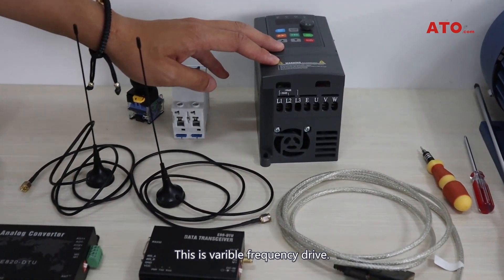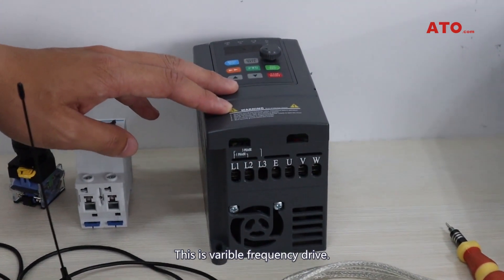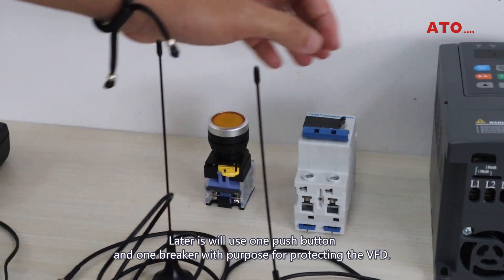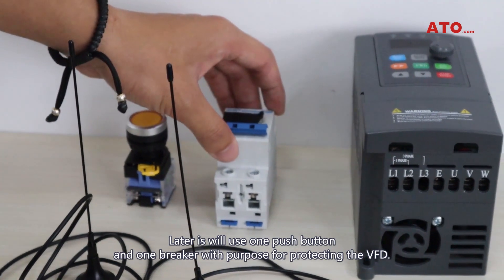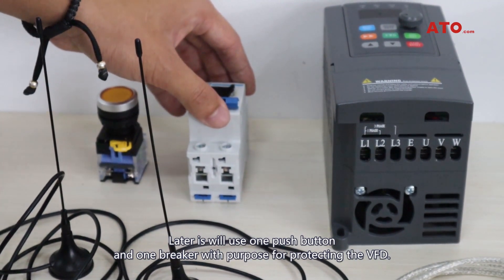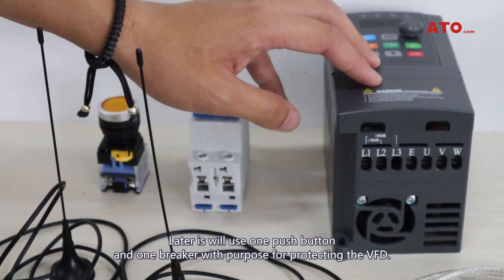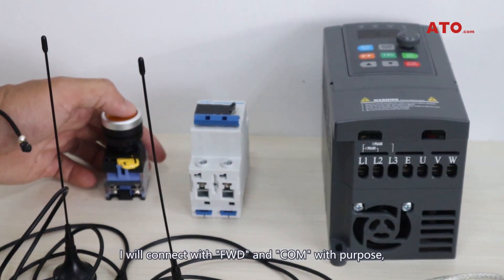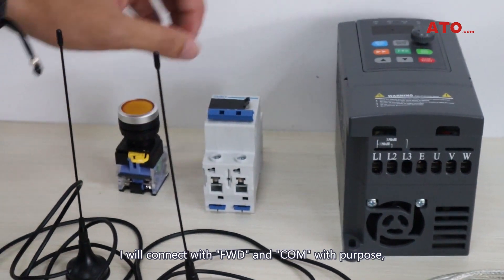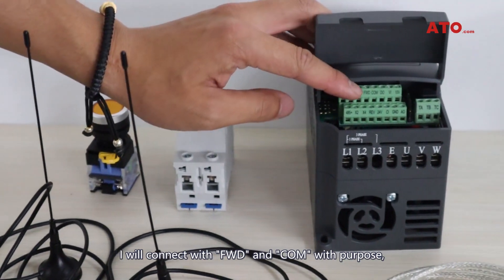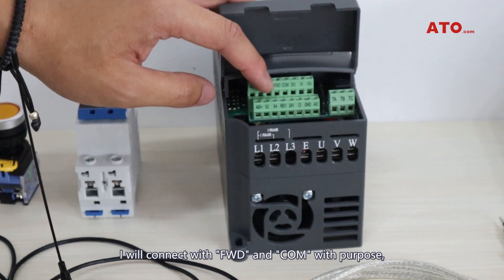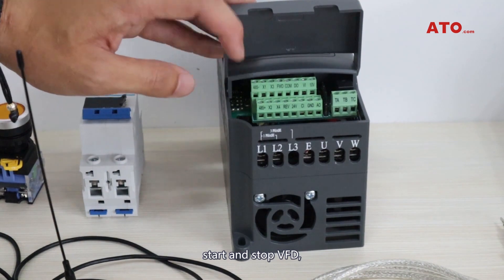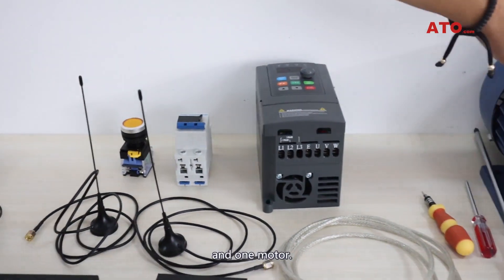This is the variable frequency drive. Later on, I will use one push button and one breaker with the purpose of protecting the VFD. This push button I will connect with forward and common with the purpose to start and stop the VFD. And one motor. Now I will start cable connection.